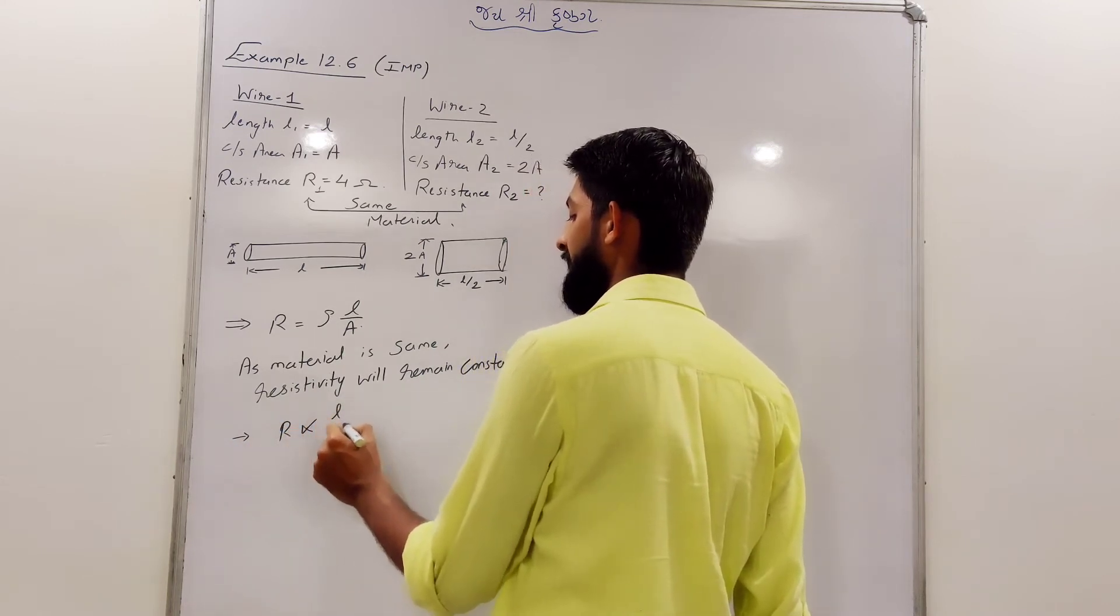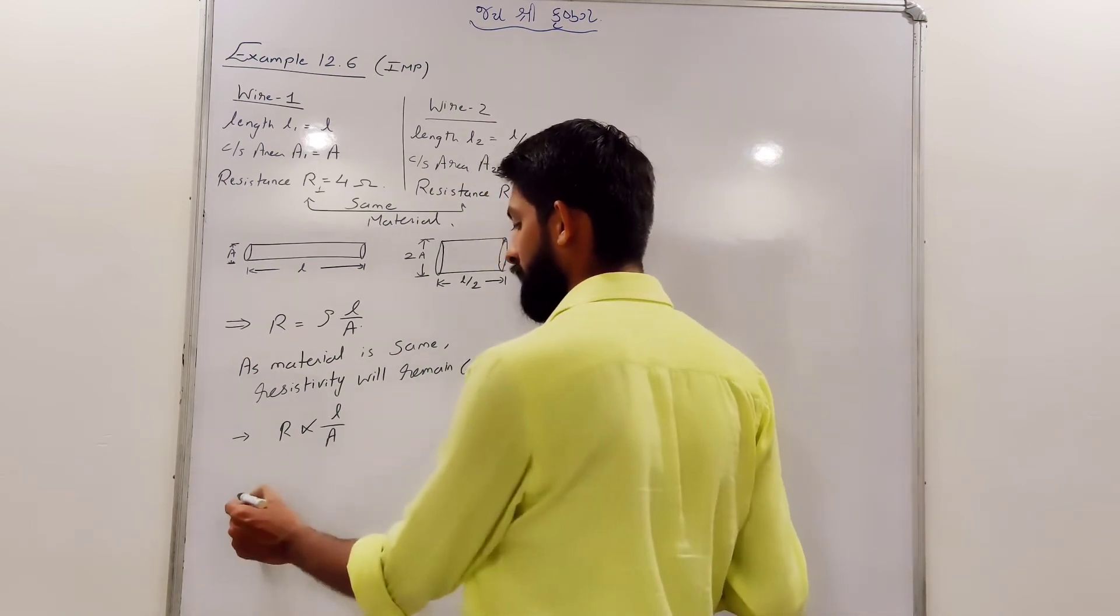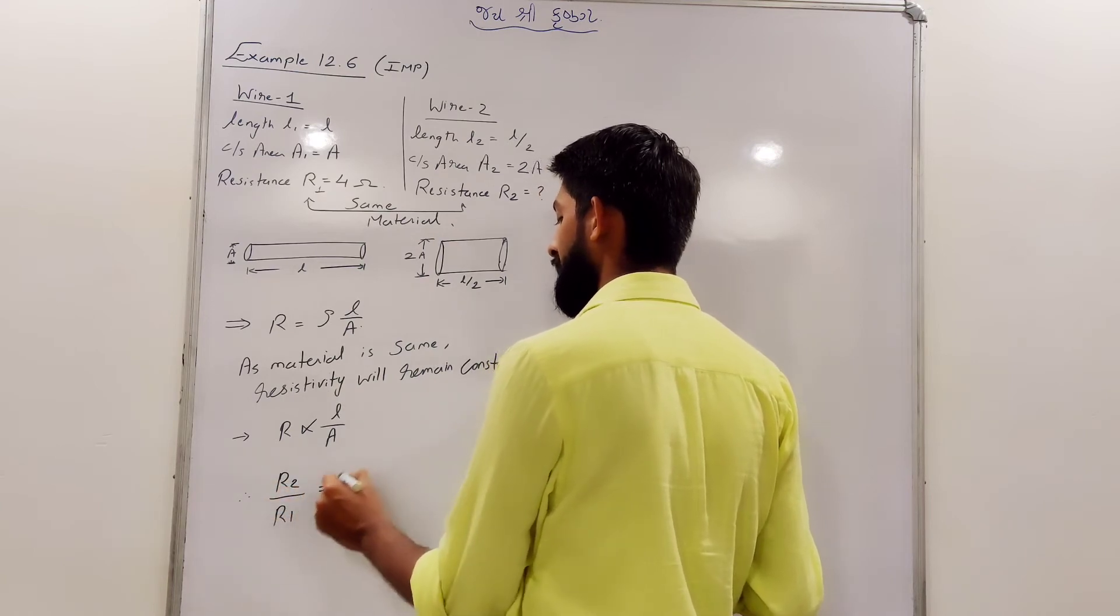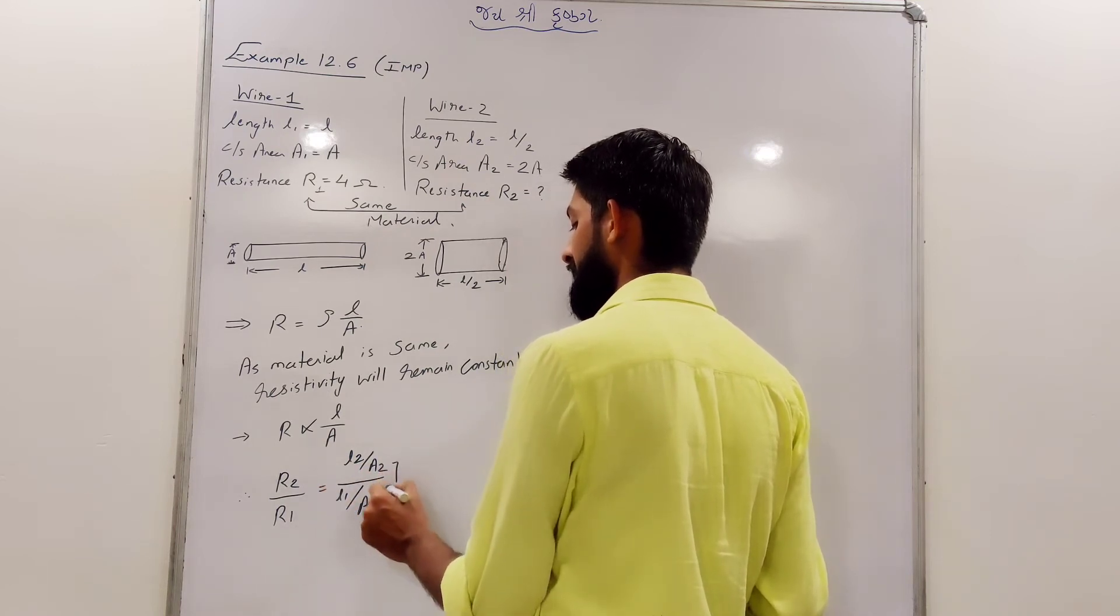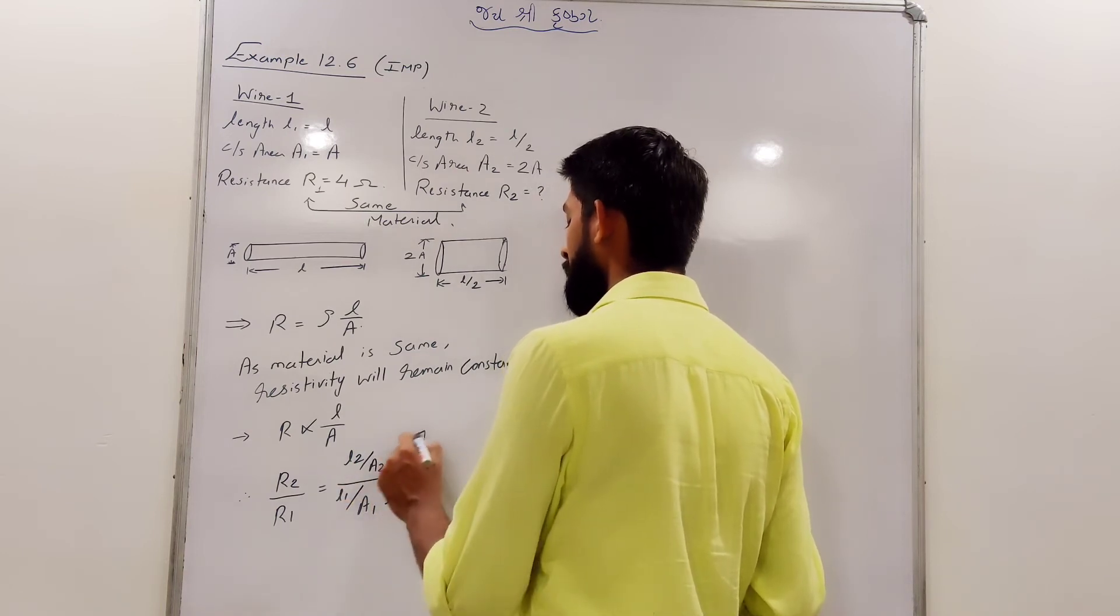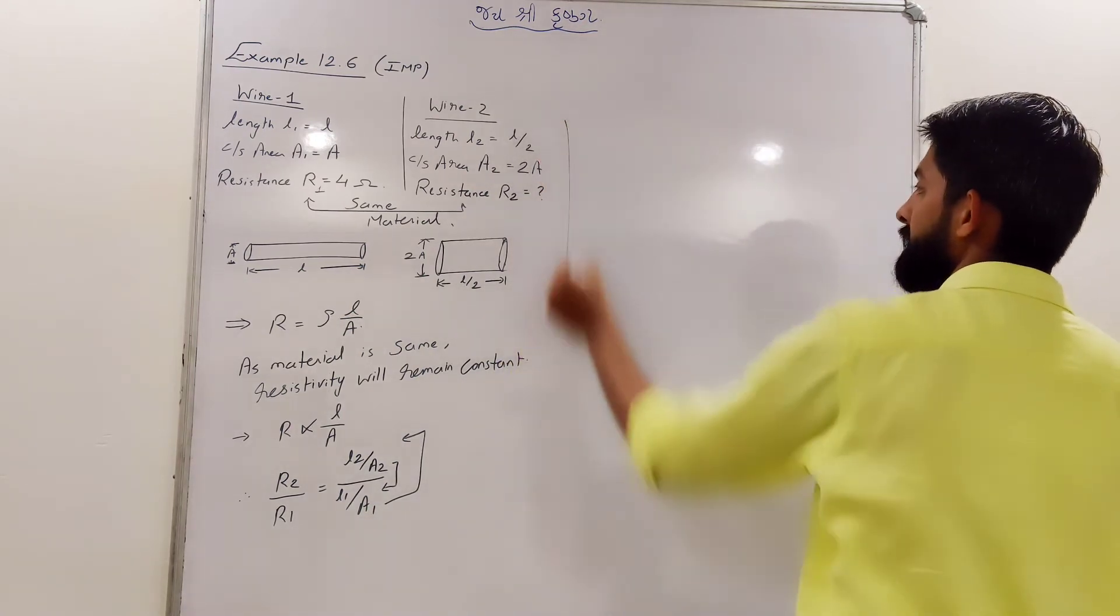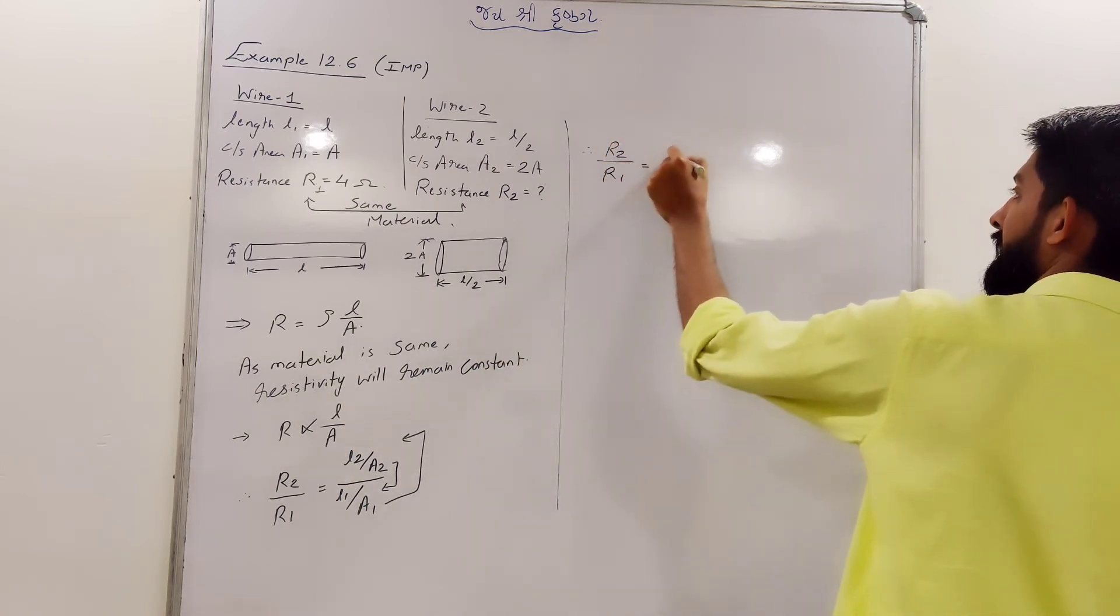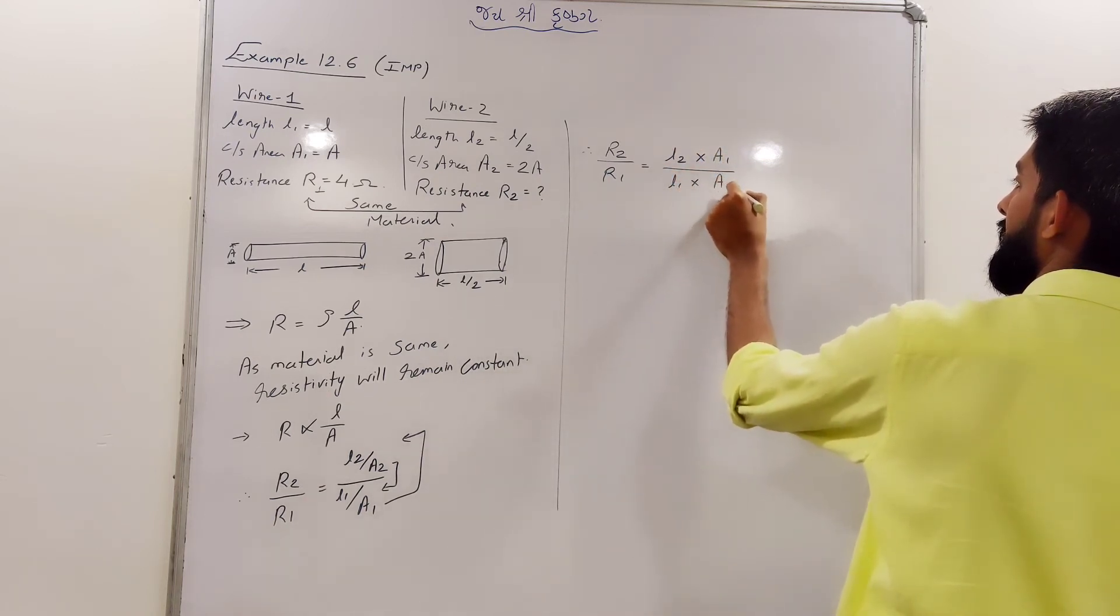So, R is dependent on L upon A. R is proportional to L by A. If you take the ratio, R2 by R1, then L2 upon A2 upon L1 upon A1. Numerator's denominator will become denominator, and denominator's denominator will go to numerator. So, R2 upon R1, that will be equal to L2 into A1 upon L1 into A2.